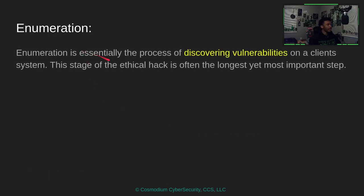We're also going to dive into a little bit of enumeration in today's episode. Enumeration is the process of discovering vulnerabilities. It is also one of the longest processes of an ethical hack — the stage is often the longest and most important, because if we can't find any vulnerabilities, then we can't hack it. We can only hack it if there's a vulnerability we can exploit.